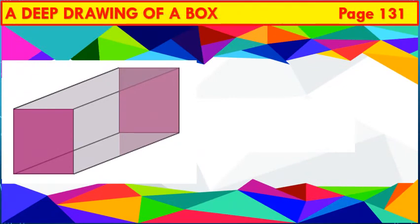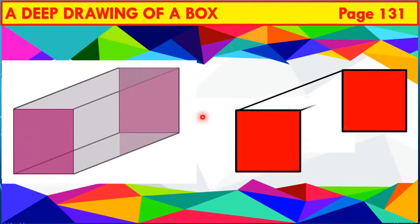Here we go. Children, in the same way, make a deep drawing of this box. Here we go. We just have to join the corners of both squares.